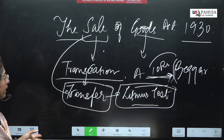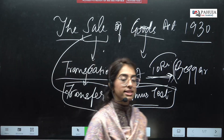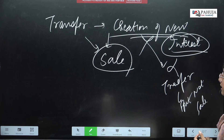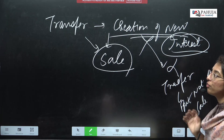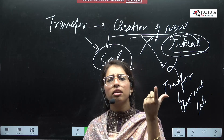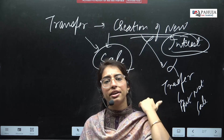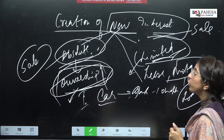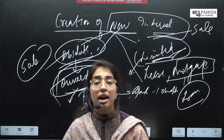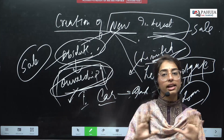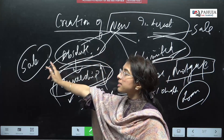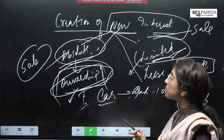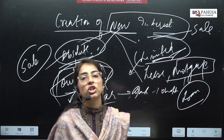So what did we discuss right now? We discussed the meaning of 'sale' and the meaning of 'goods'. The meaning of sale became very clear — it is a transaction, meaning any kind of transfer. The litmus test of transfer is creation of new interest. If any new interest is being created in someone's favor by giving something, that is a transfer. Now a transfer can be absolute or limited.